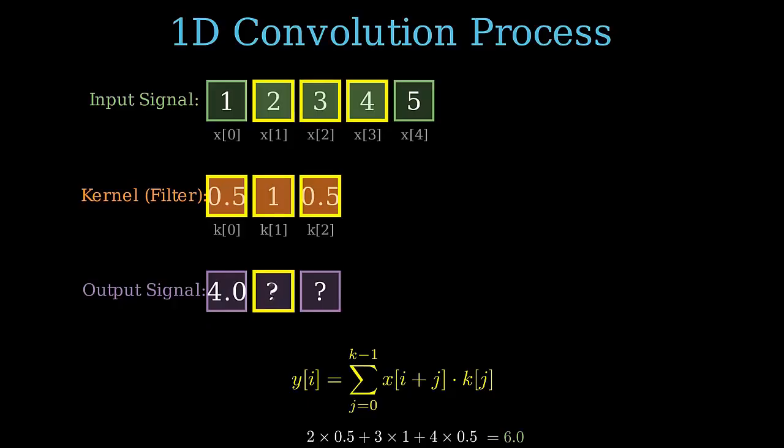Next, the kernel slides one step to the right, now covering 2, 3, and 4. The calculation repeats: 2 times 0.5 plus 3 times 1 plus 4 times 0.5. The sum is 5. This is the second element.